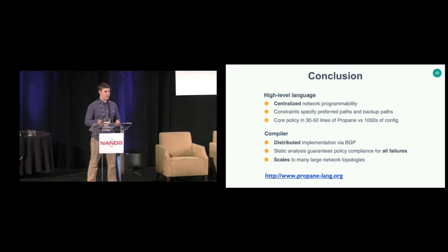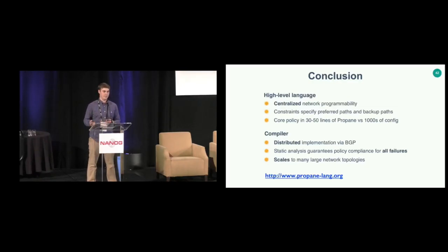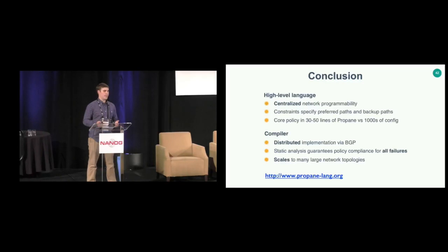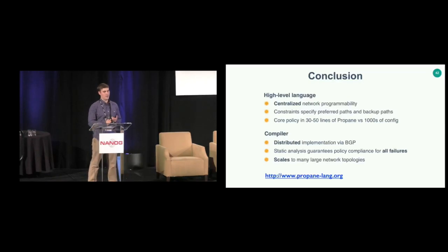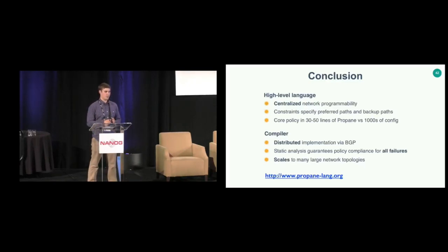To summarize Propane: it's a new high-level language providing centralized network programmability. You write constraints in terms of preferred paths, backup paths, and traffic path shapes through your network. The core policy is quite concise — one configuration for your entire network — and the compiler generates a completely distributed implementation via BGP. The compiler also does static analysis to check policy compliance for all possible failures and has analyses for correctness checking. It can scale to many realistic network topologies and is available as open source at propaneling.org.